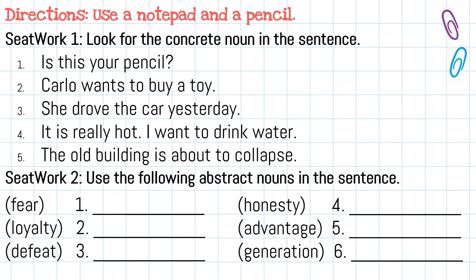Seat work 2: Use the following abstract nouns in a sentence. Number 1: Fear. Number 2: Loyalty. Number 3: Defeat. Number 4: Honesty. Number 5: Advantage. Number 6: Generation.